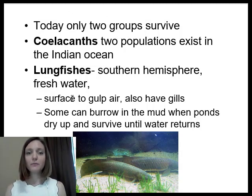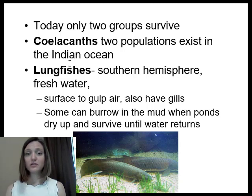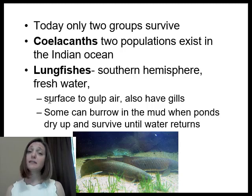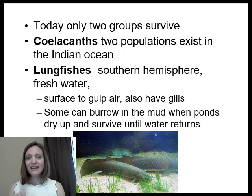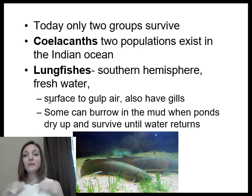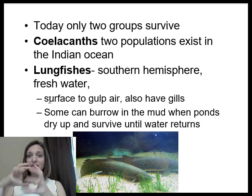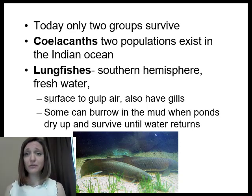The other group of lobe-finned fish is the lungfish, which are common in the southern hemisphere and mostly found in freshwater. They can come to the surface to gulp air, and many also have gills. They live in freshwater ponds that sometimes dry up during warmer months. Some have the ability to burrow down into the mud and create a little cocoon-like encasement, then go into a state of torpor — slowing their metabolism and shutting down much of their organ function until the water returns, at which point they burst out of that mud encasement to survive those dry spells.